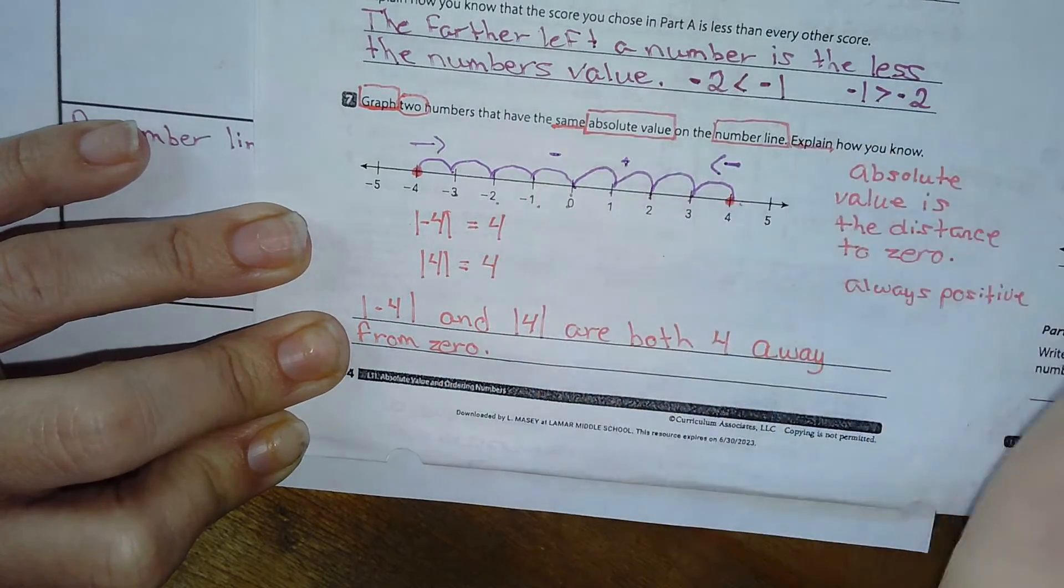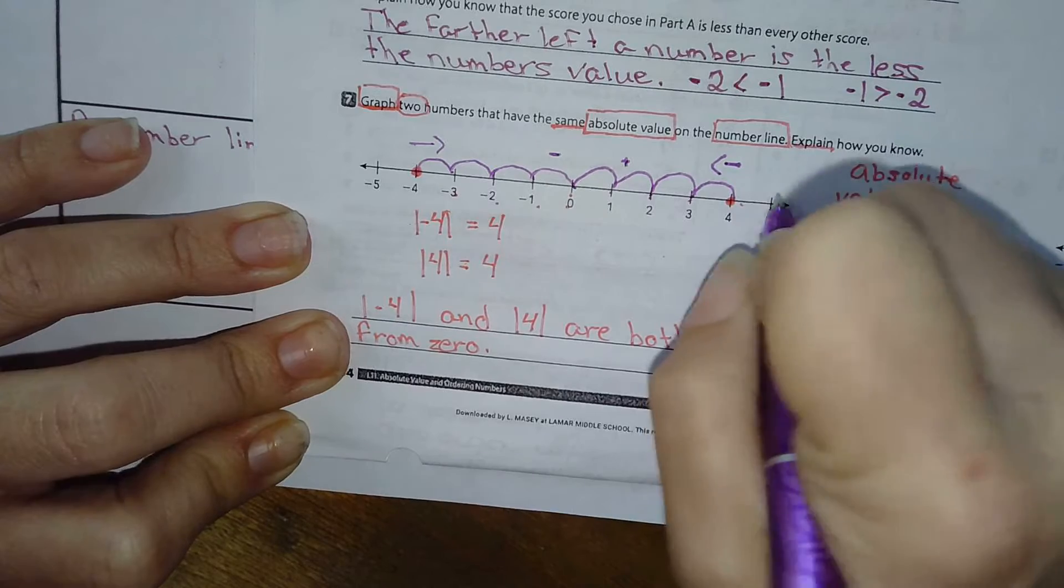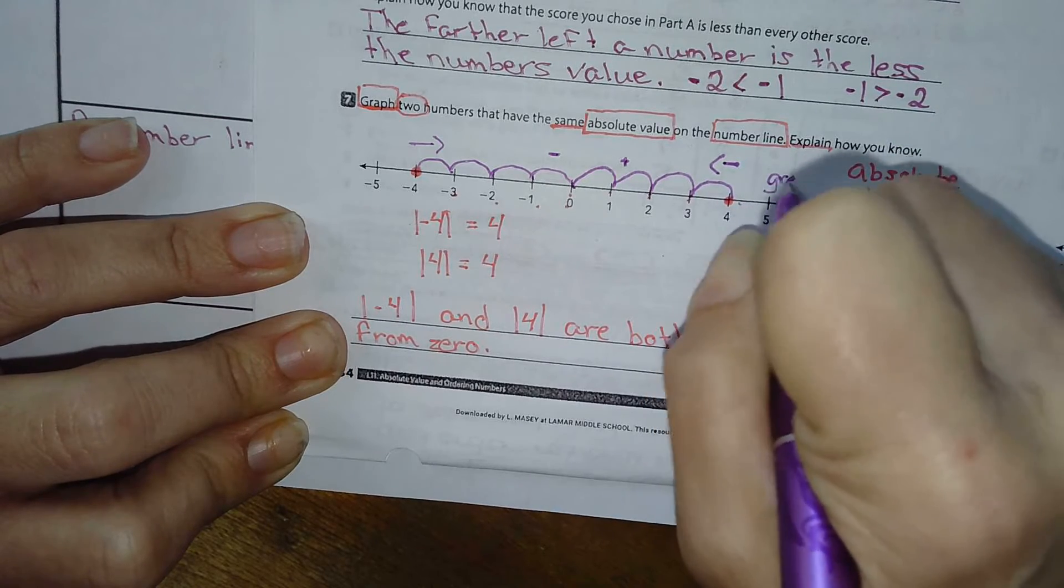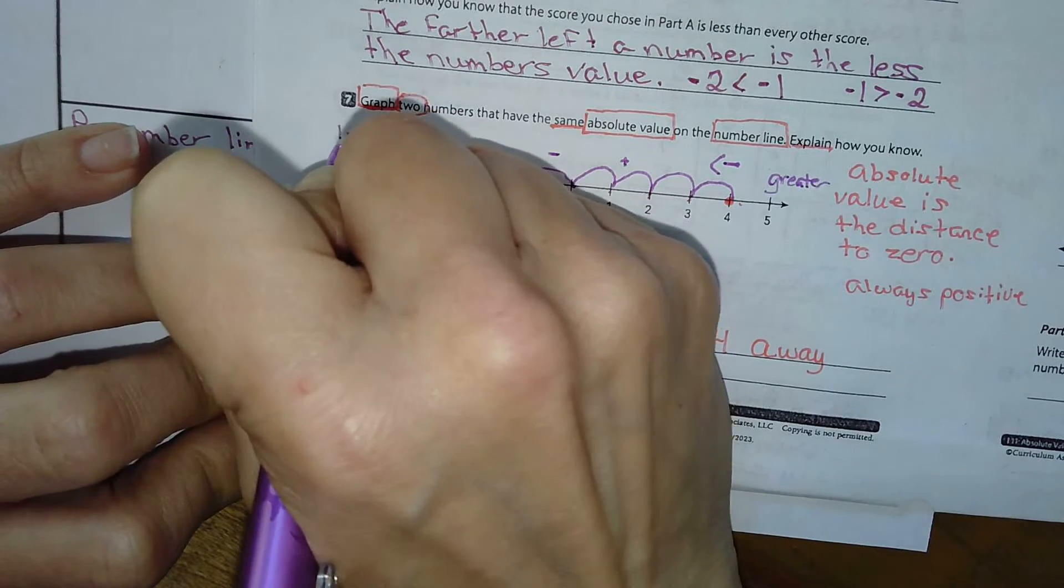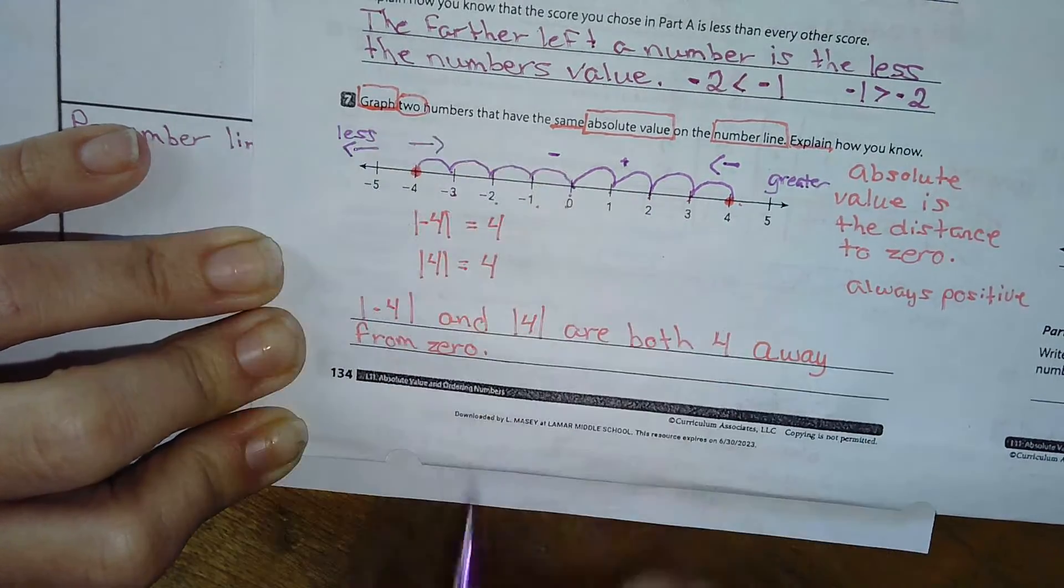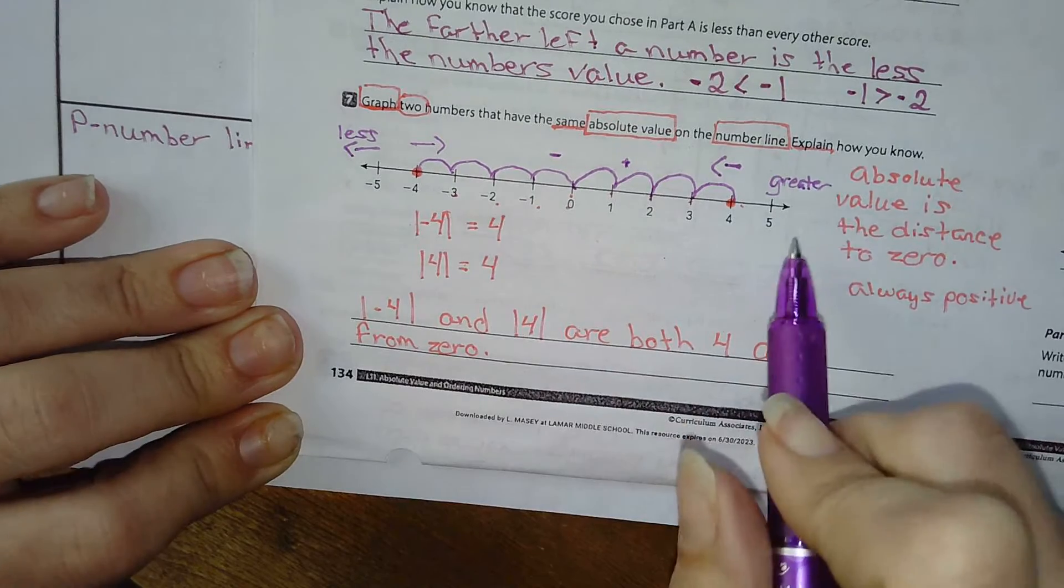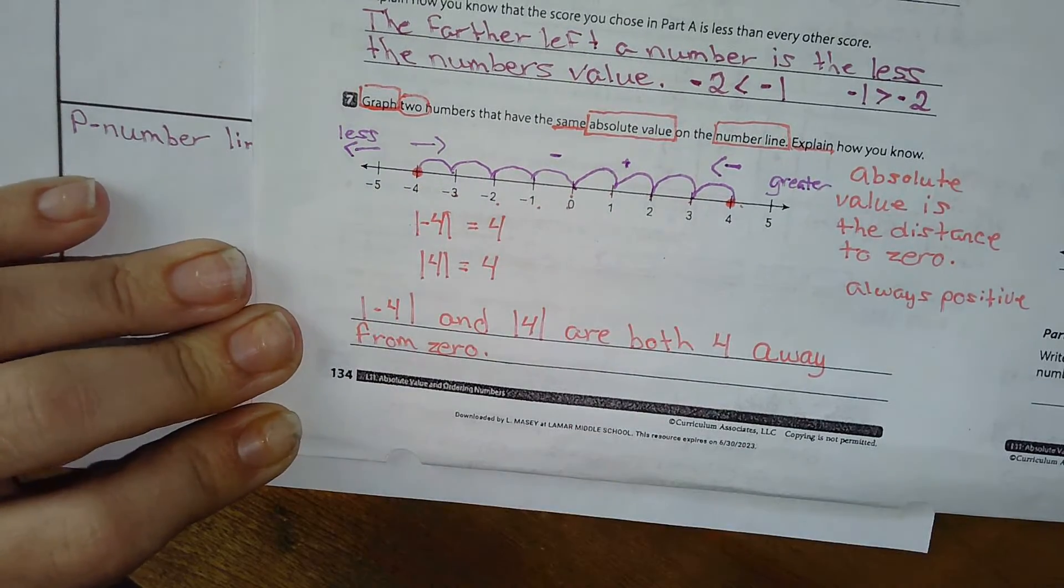This is my negative side. This is my positive side. The more I go this way, it's greater and it's less. The more I go this way, the more I go to the left. Right is greater, less to the left, okay?